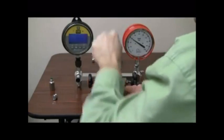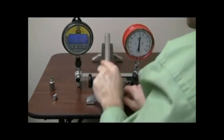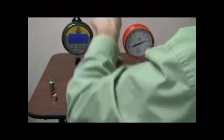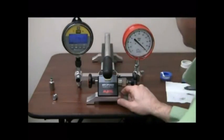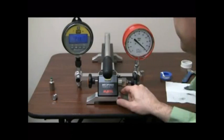Gently crank down on the handle to generate the pressure that you desire. In this test, we're going to go up to full scale, which is 200 psi. Once again, I'm checking for leaks, making sure everything's tight. Now it will take some time to settle, but as you see here, we will not have any leaks present.